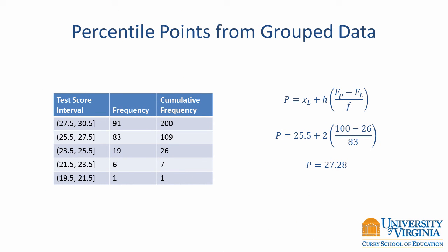There is also a way to compute percentile points from a grouped frequency table. For this method, you start with the lower exact limit of the interval of interest and move into the interval a fractional amount. Using this method to compute the median, we get 27.28, which is slightly different from the value of 27 that we got from the ungrouped frequency table. This difference is due to the use of a different method of computing percentile ranks.